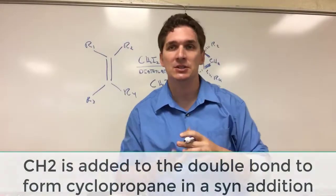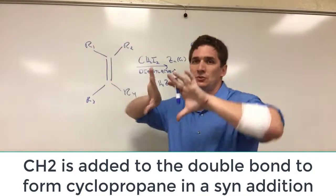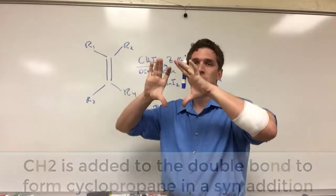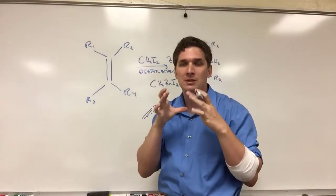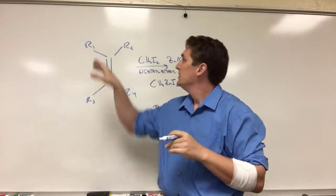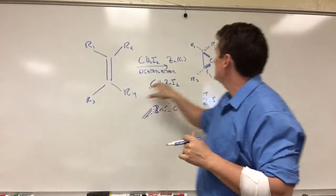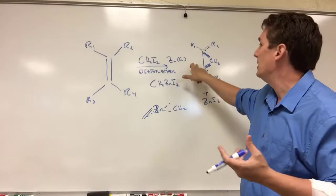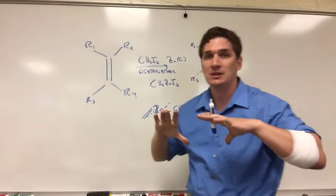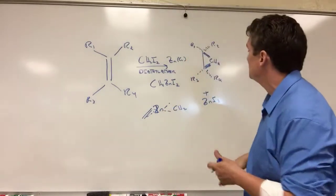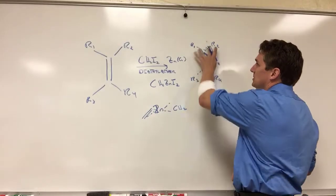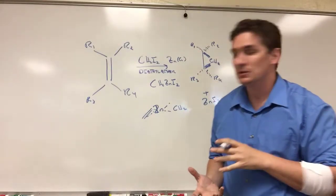Now the big thing here is that this is a syn addition. So this R1, R2 group, R3, R4 are all pushed down into the plane of the board. So when we look at the final stereochemistry here, these two and these two are going to end up on the opposite side of the double bond where the CH2 gets attached. So they get pushed down and we need to draw the stereochemistry to represent that these are pushed into the board, and this CH2 group is coming back out of the board.